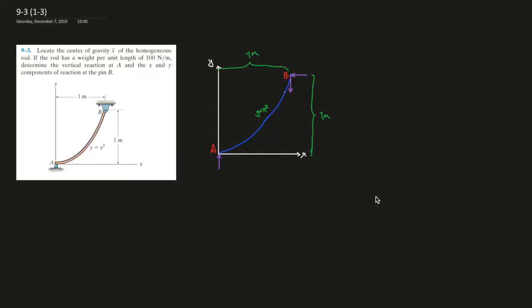Question three says locate the center of gravity x-bar of the homogeneous rod. If the rod has a weight per unit length of 100 Newton per meter, determine the vertical reaction at A and Y components of reaction at pin B.